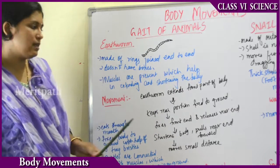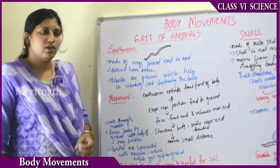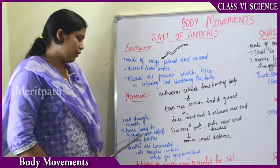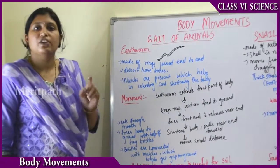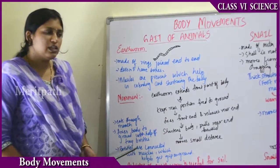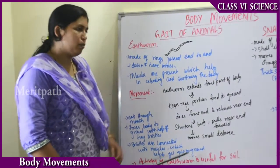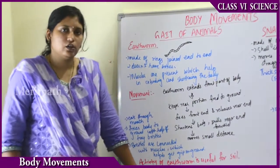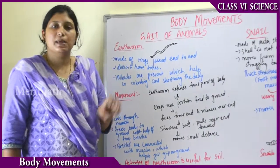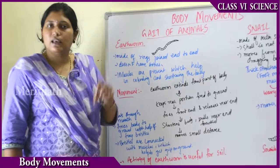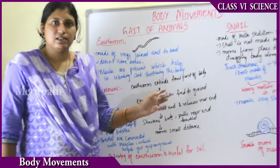Earthworms move a small distance at a time but still move a little faster than snails. It fixes the body to the ground with the help of tiny bristles — hair-like structures present on the body. These bristles are connected with the muscles of the earthworm's body, which help it grip the ground. The activity of earthworms is beneficial to the soil because they eat soil and create spaces that incorporate air, providing oxygen and minerals, and increasing the fertility of the soil.